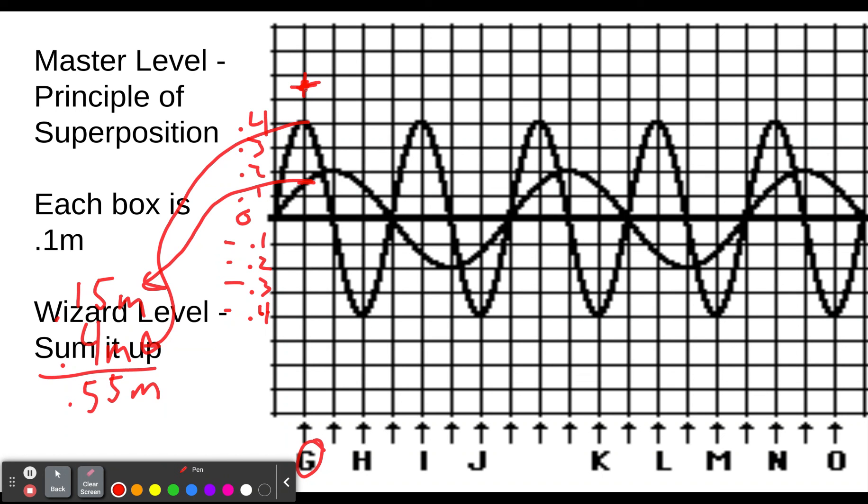Let's do one that's destructive interference. We see this one has, at this point, negative 0.4 meters, and we see one here that is positive 0.15 meters. When we add those together, negative 0.4 and positive 0.15, we get negative 0.25 meters. If we were drawing it on the wizard level, we'd put our little plus right in there at negative 0.25.